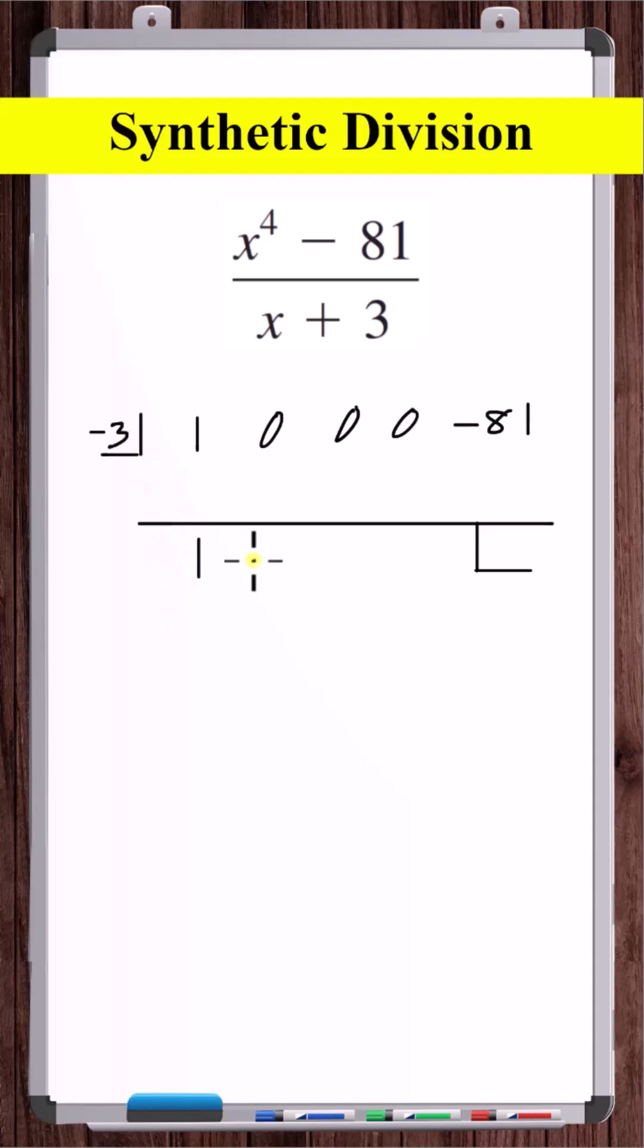Now we bring down the one, multiply one by minus three, that's minus three and put that here. Now you add these two numbers. Zero plus minus three is minus three.